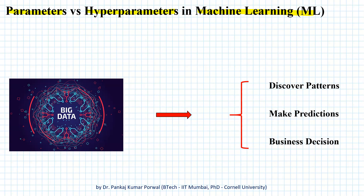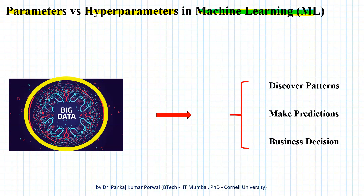A general machine learning problem is posed as a problem where we are given a large data set and we want to discover some patterns in that large data set or make some predictions based on that large data set.